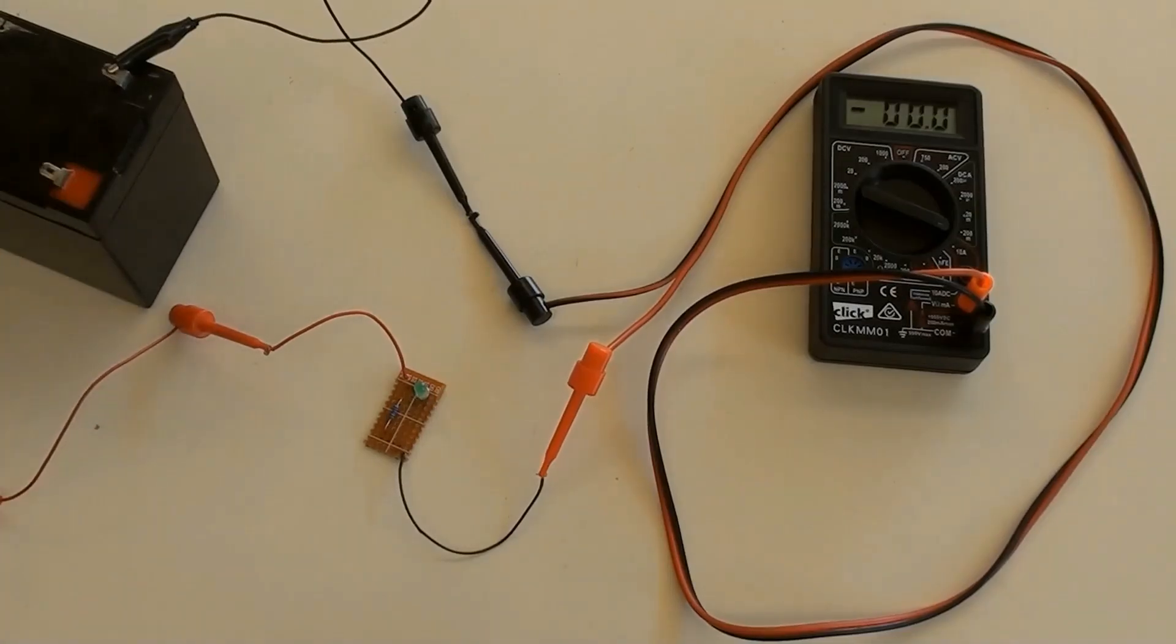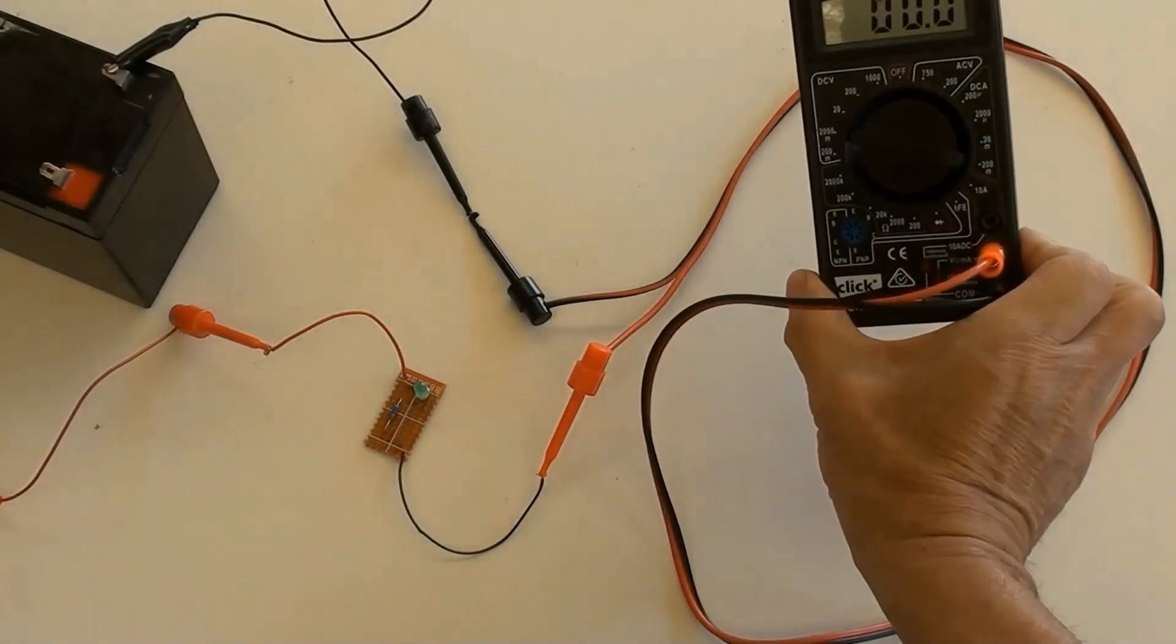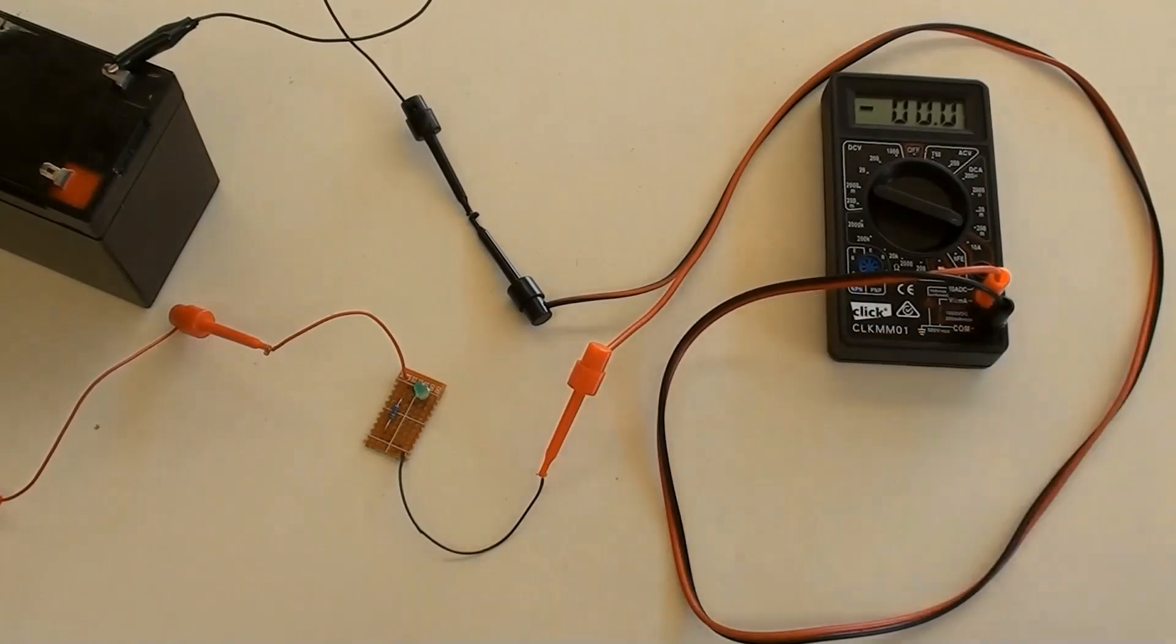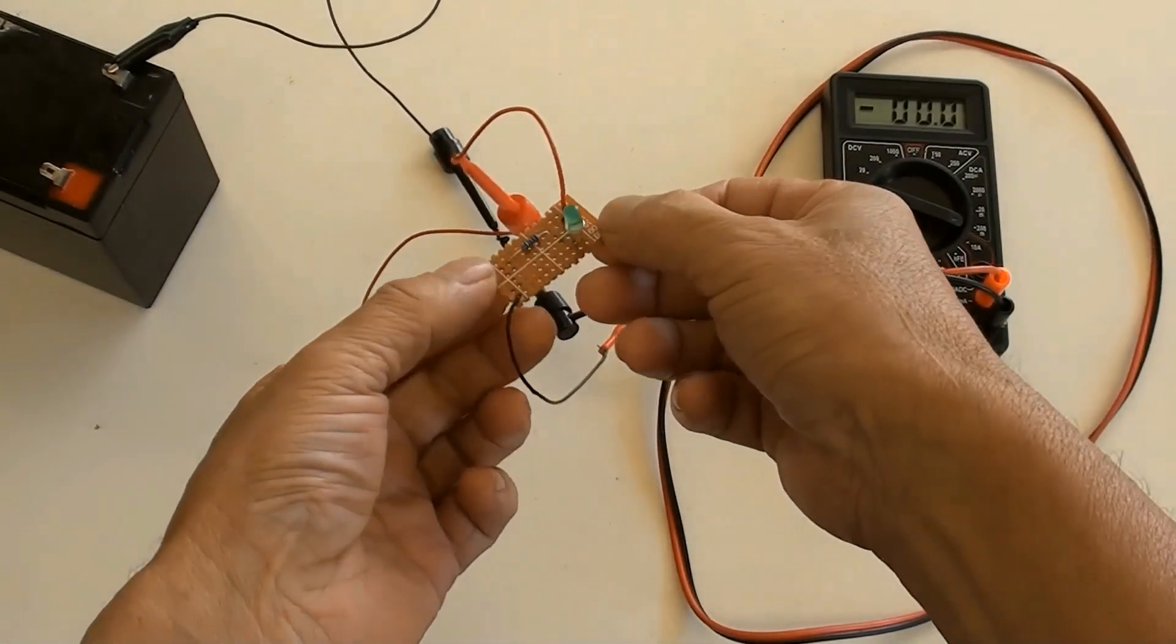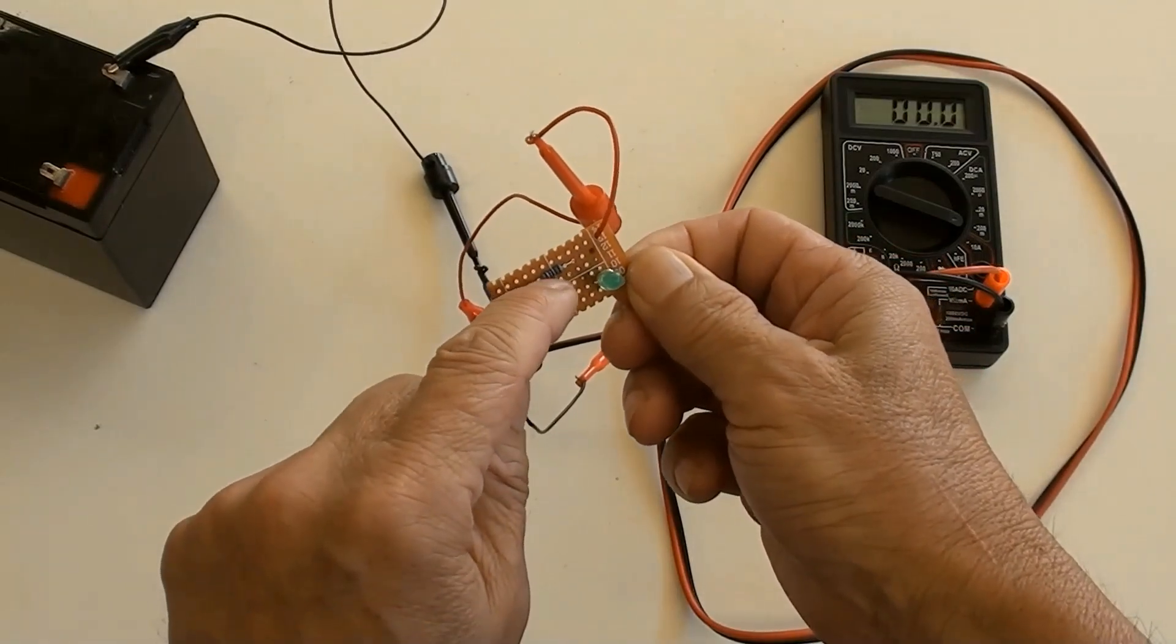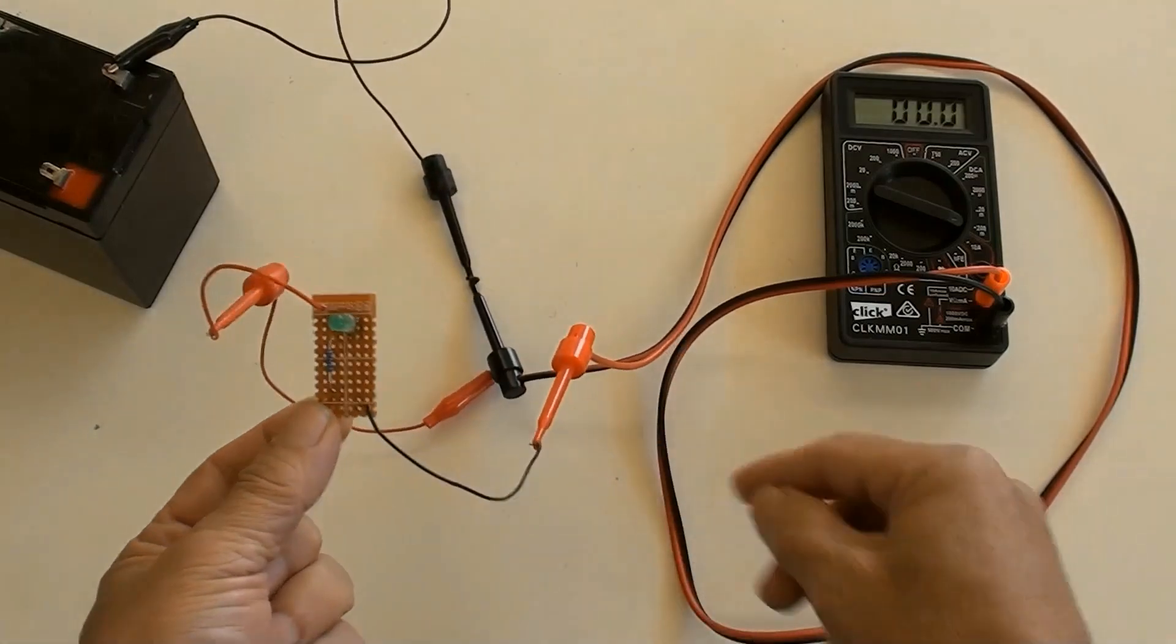12 volt battery is here and a multimeter has been connected to measure the LED circuit current. 990 ohms, 1.5 watt resistor is here, and 2.5 volt green LED is there.